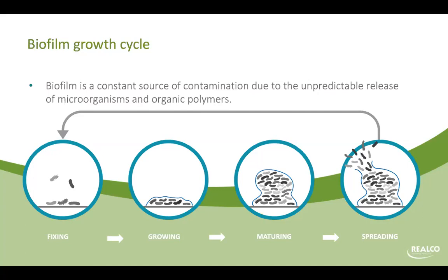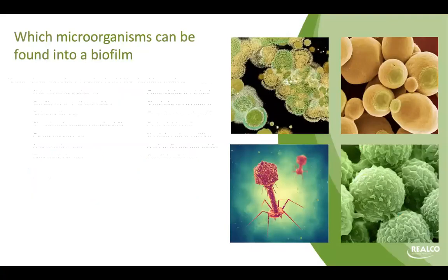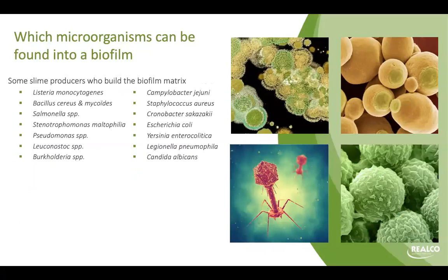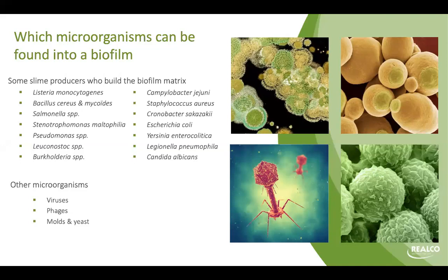Biofilm includes different kinds and types of germs. Microorganisms well known to be biofilm formers include Listeria, Bacillus, Staphylococcus, Cronobacter, and others. It's not only bacteria — it can also be yeast and molds; Candida, for example, is known to be a biofilm former. Inside the biofilm structure there can also be other microorganisms that don't produce biofilm — viruses, phages, yeast, molds, or bacteria that are not biofilm formers but are happy to live in this protective environment.